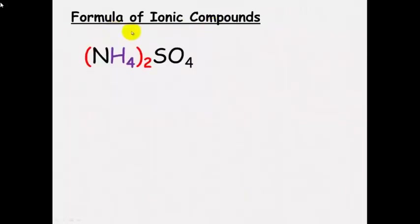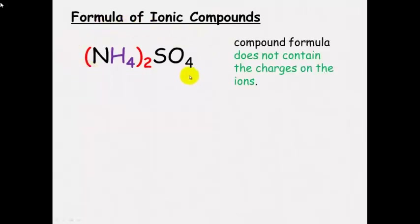As a summary for the formula of ionic compounds: the compound formula does not contain any of the charges on the ions, and it is really important that the overall charge of the compound is neutral. You don't write the charges in the formula.